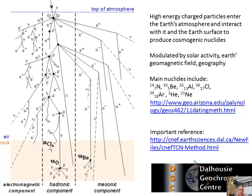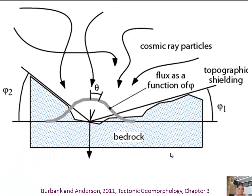One of the top centers is the Dalhousie Geochronology Center in Canada. They have a really nice reference where every detail of cosmogenic dating is covered at that link. Basically, these particles come down and hit the rock.